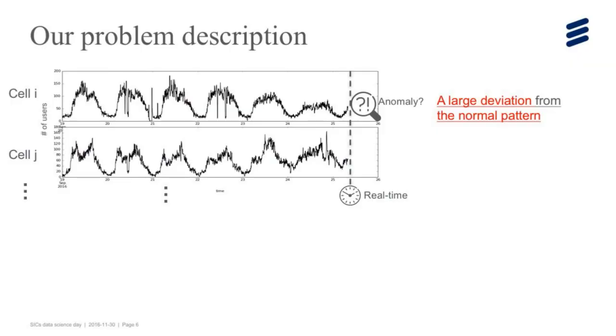In this perspective, one of the key performance metrics in this problem is the low false positive rate. Let me describe our problem in this talk. We focus on a single KPI time series per cell. For each cell, we observe the time series in parallel in real-time, one value per cell, and we want to decide whether this value is anomaly or not. Here, our interpretation of anomaly is a large deviation from the normal pattern.